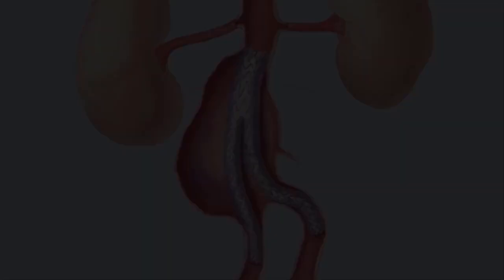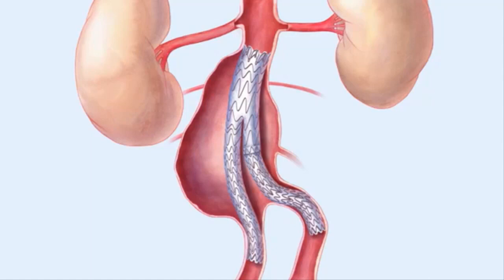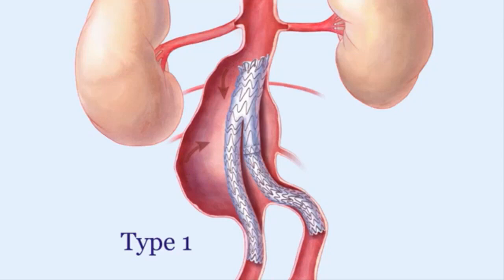In a significant number of patients, type 1 endoleaks occur. The blood flow doesn't go through the stent graft; instead, the gap between the stent graft and the aortic vessel wall allows blood to enter the area of the aortic aneurysm, further weakening the tissue and pressurizing this volume, which can eventually lead to rupture.